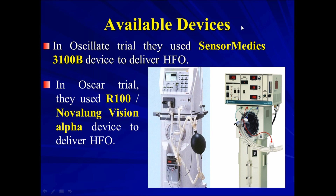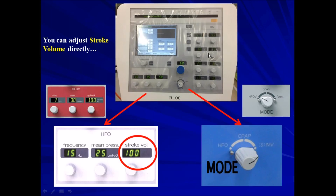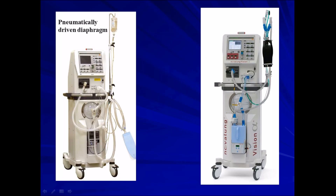Available devices in real life: there are two main devices. One is the SensorMedix 3100P, which was used in the OSCAR trial. The other trial, the OSCAR trial — the English trial — used the Japanese device, the R100, also known as the Novalung Vision Alpha. This second device is slightly different: it has high frequency built in plus conventional mechanical ventilation, so you can shift the patient directly on the same device. It does not control delta pressure; it controls tidal volume or stroke volume directly. The comparison between these two devices is beyond the scope of this presentation.